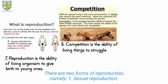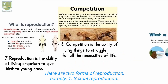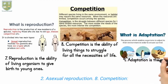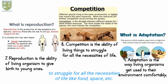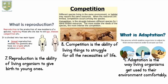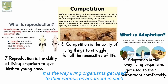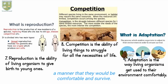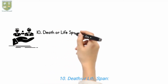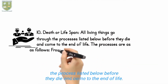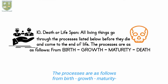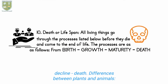There are two forms of reproduction: 1. Sexual reproduction and 2. Asexual reproduction. 8. Competition. It is the ability of living things to struggle for all the necessities of life like food, space, etc., to survive in the environment. 9. Adaptation. It is the way living organisms get used to their various environments such that they would be comfortable and survive. 10. Death or life span. All living things go through the following processes before they die: from birth to growth to maturity to decline to death.